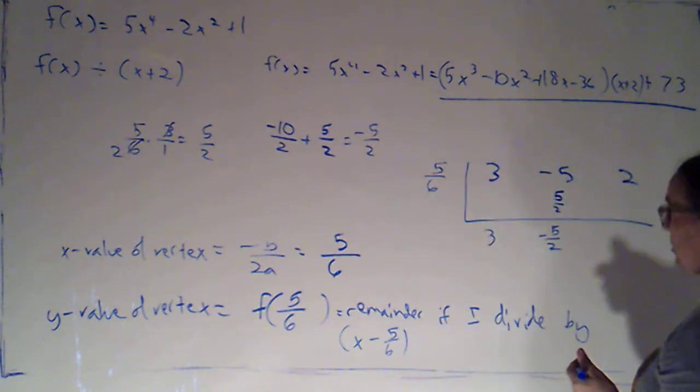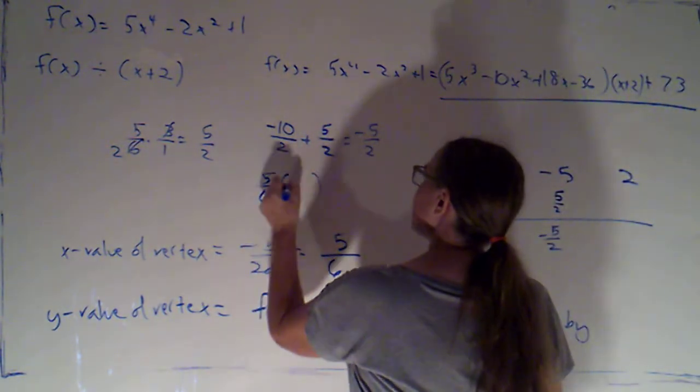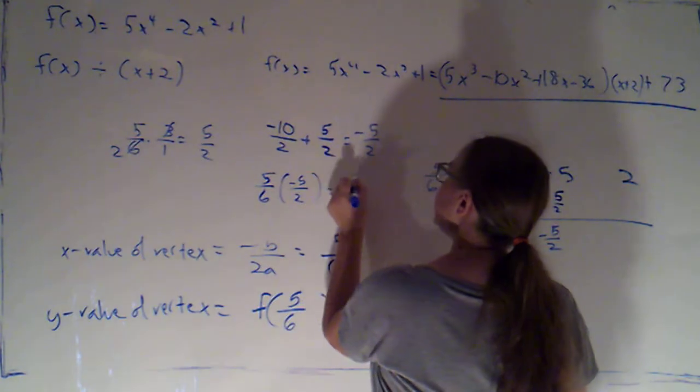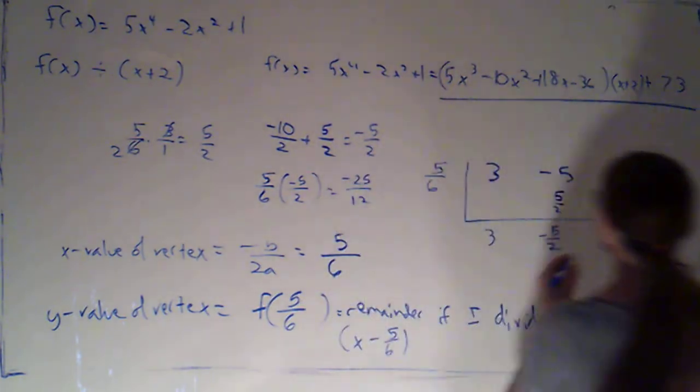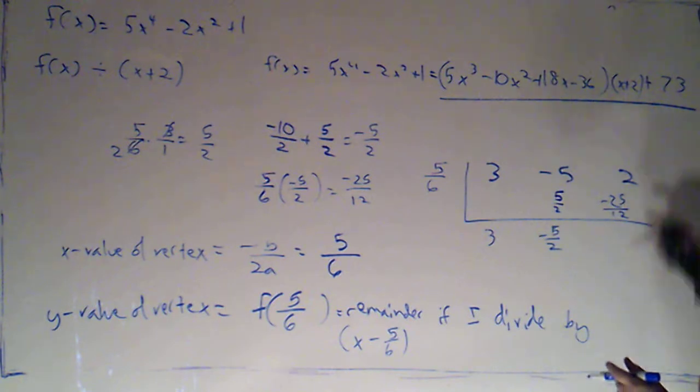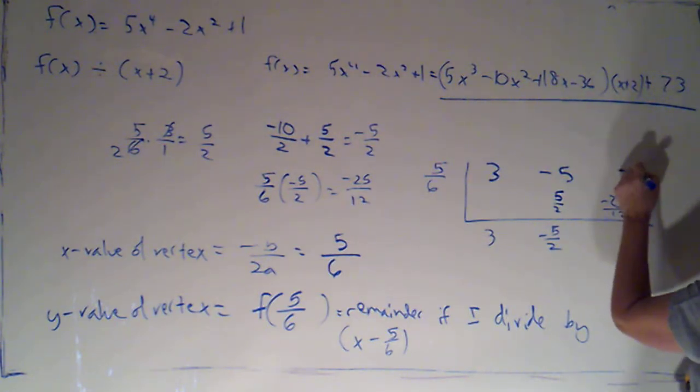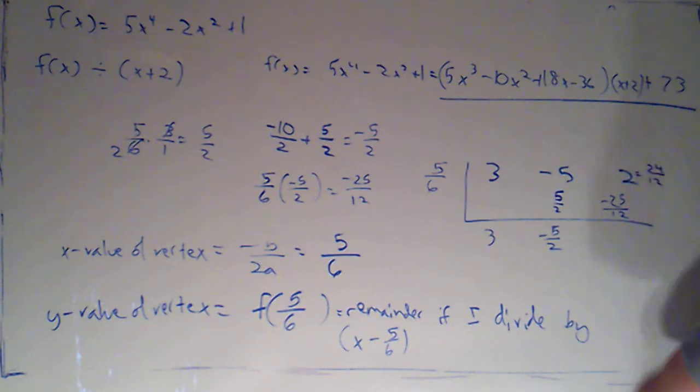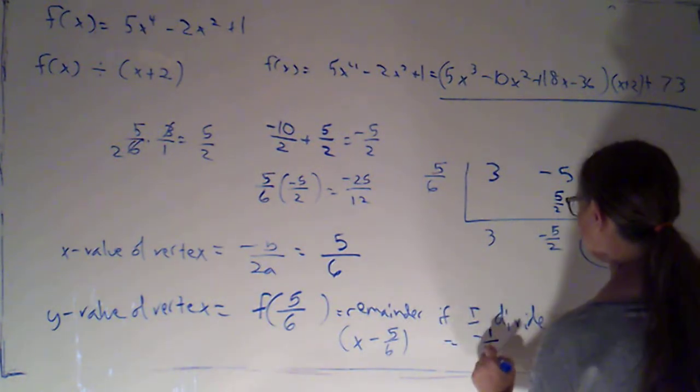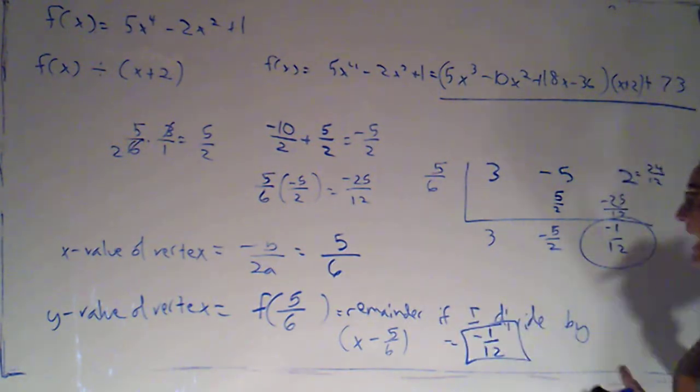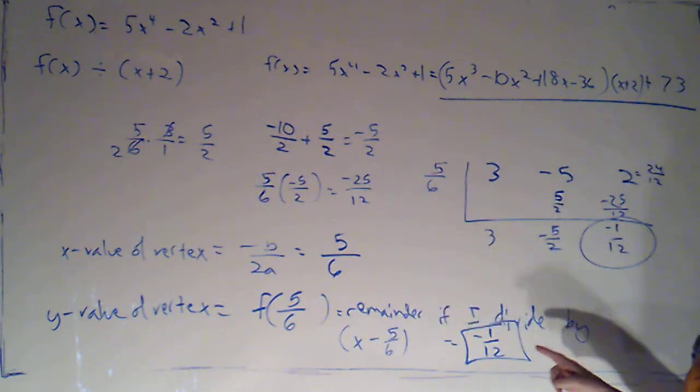And then I can multiply 5 sixths times negative 5 halves is going to be negative 25 twelfths. And now I've got to add that to 2. 2 would be 24 twelfths minus 25 twelfths. That's 24 twelfths. Minus 25 twelfths would give me negative 1 twelfth. That remainder is negative 1 twelfth. So that would be the y value of my vertex.